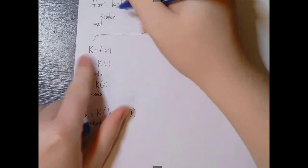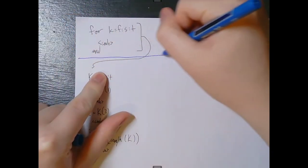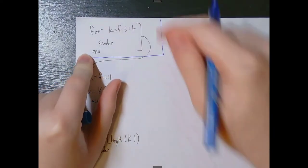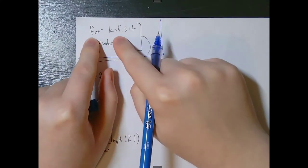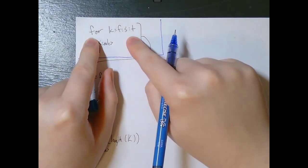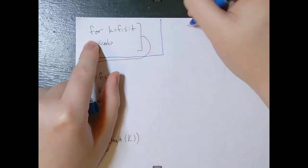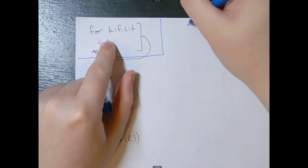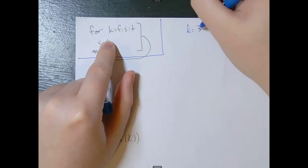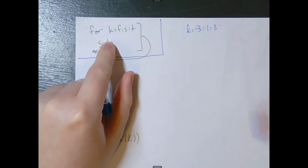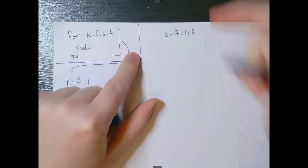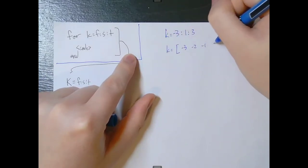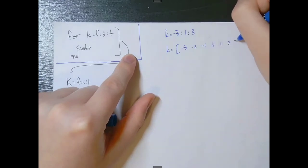A loop in MATLAB fundamentally takes the form outlined here. We say 'for k equals' some sort of colon notation. So if you want k to be every integer from negative three to three, you could say k equals negative three colon one colon three, which means k equals the array negative three, negative two, negative one, zero, one, two, three.